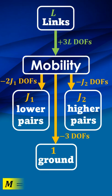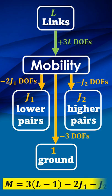Mobility M is then equal to three times L minus one minus two J1 minus J2.